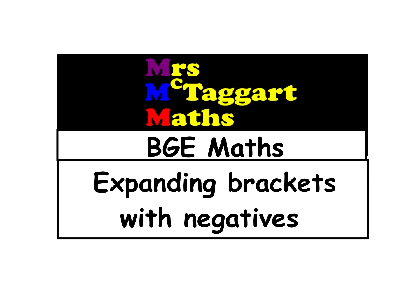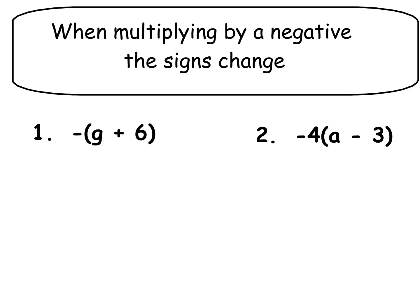So prior knowledge should be that you can already expand a simple bracket with a number or a letter out the front. This gets straight into it since you already know that having anything in front of a bracket means you have to multiply by it. The only thing different is you have to watch your signs.